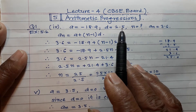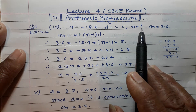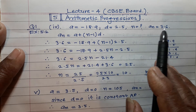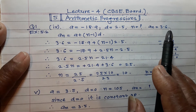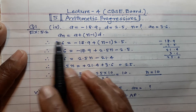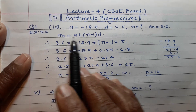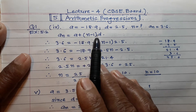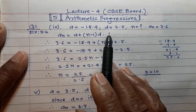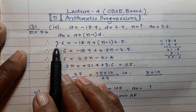Question 14: given a = -18.9, d = 2.5, aₙ = 3.6, find n. Now let's look at the solution. We use the formula aₙ = a + (n-1)d and substitute the given values.